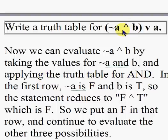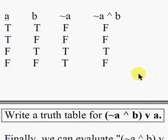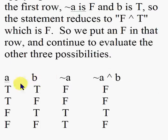In the first row, ~a is false and b is true, so the statement reduces to false and true, which is false. So we put a false in that row and continue to evaluate the other three possibilities.